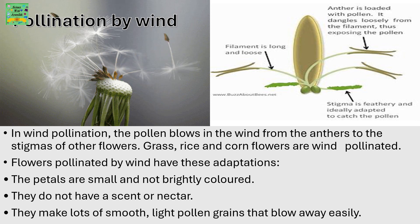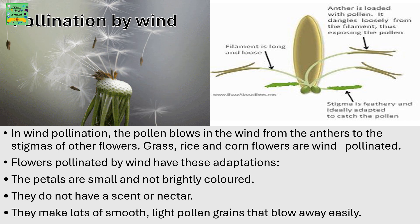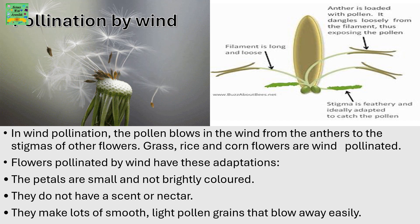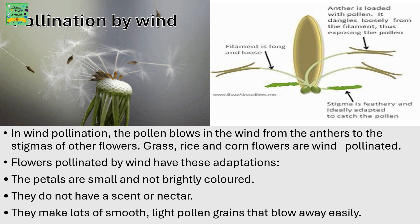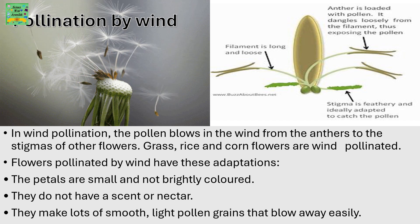Flowers pollinated by wind have these adaptations: the petals are small and not brightly colored; they do not have a scent or nectar; and they make lots of smooth, light pollen grains that blow away easily.